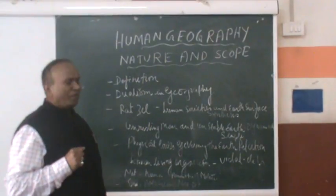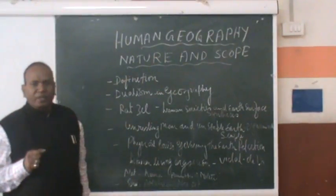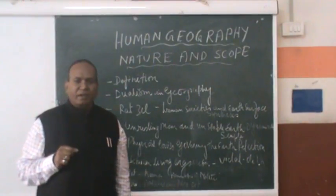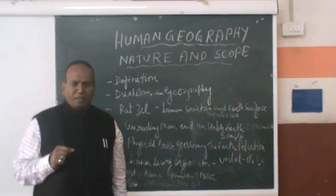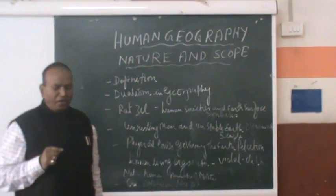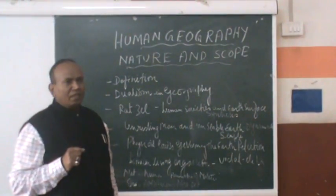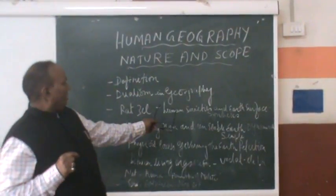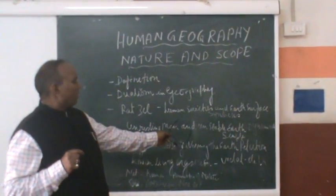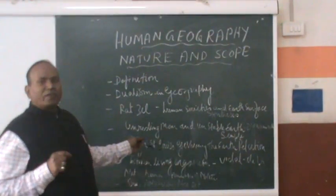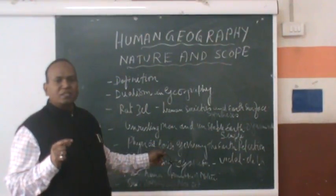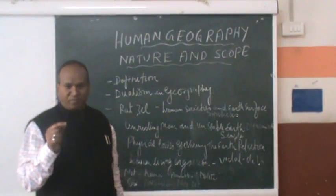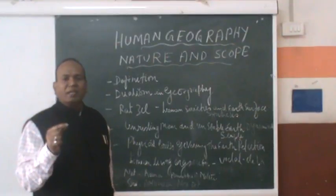We are going to discuss the definition of human geography. Definitions have been given by many geographers such as Frederick Ratzel, Ellen Churchill Semple, and Paul Vidal de la Blache. According to Ellen Churchill Semple, human geography is the study of the relationship between the unstable earth and the unresting man — it is basically a relationship between unresting man and unstable earth.